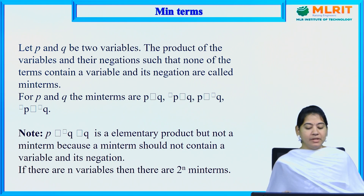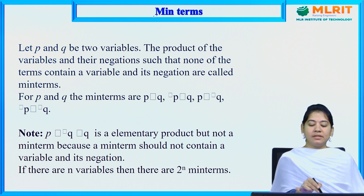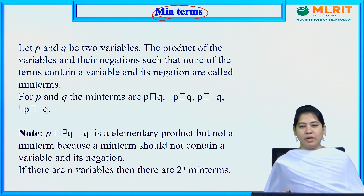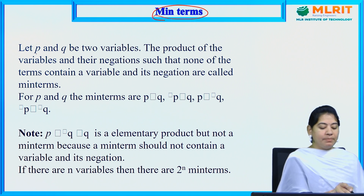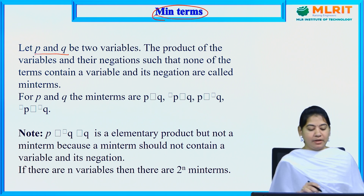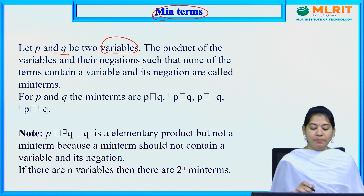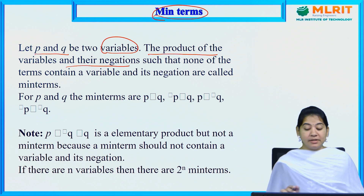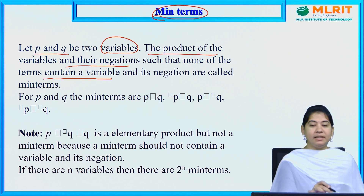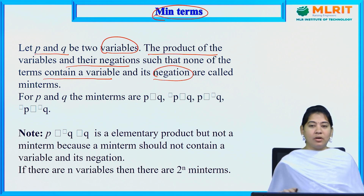First we have to understand min terms. Before going to discuss PDNF, we need to know what is meant by a min term. Let P and Q be two variables. The product of the variables and their negations, such that none of the terms contains a variable and its negation, are called min terms.